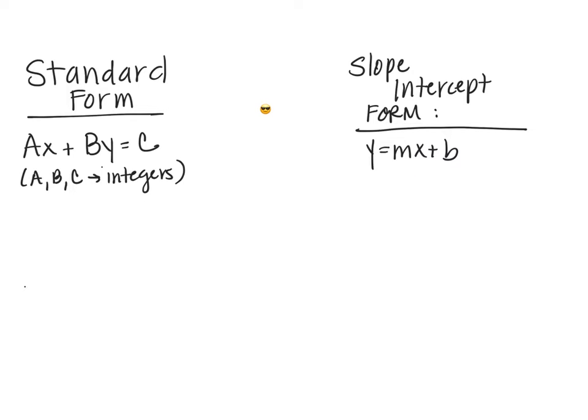So to review, standard form is Ax plus By equals C, where A, B, and C are integers. That's the standard form of a linear equation. You also learned about slope intercept form, which is y equals mx plus b, where m is your slope and b is your y-intercept.